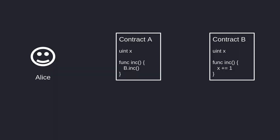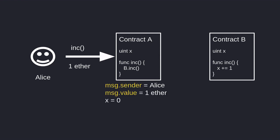Suppose there are two contracts, Contract A and Contract B. Inside Contract A we have a function called increment, and when you call it, it calls another function also called increment inside Contract B. Now suppose Alice calls the function increment inside Contract A and sends one ether. Inside Contract A, msg.sender will equal the address of Alice, msg.value will equal one ether, and the state variable x is equal to zero.